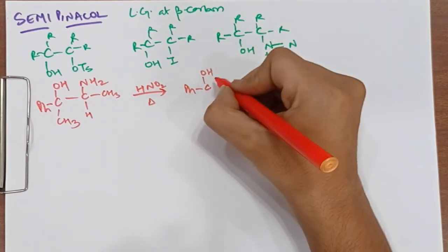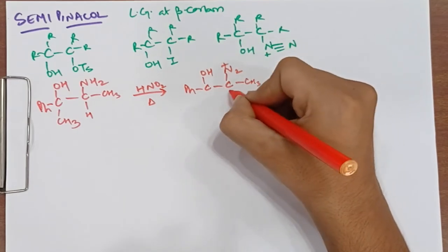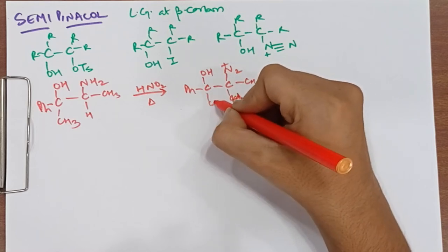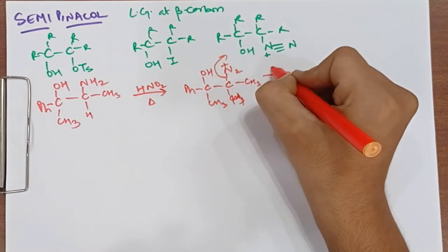Now in semi-pinacol rearrangement, we have diazotization, so here we have a diazonium group. On heating, nitrogen gas leaves.